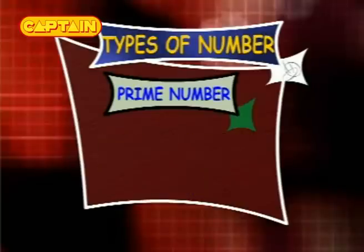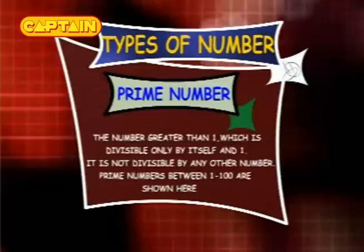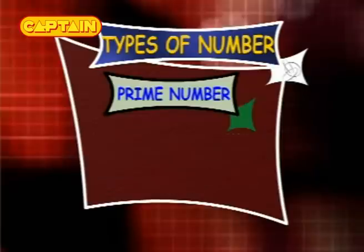Prime numbers: a number greater than 1 which is divisible only by itself and 1, and not by any other number. Prime numbers between 1 and 200 are shown here.